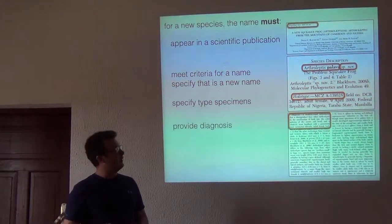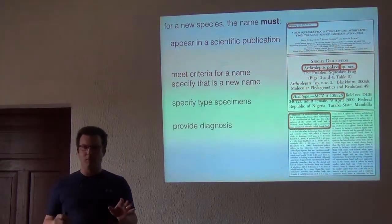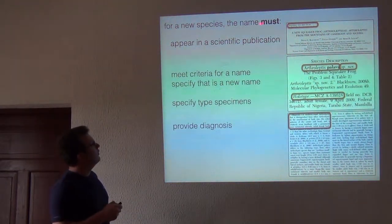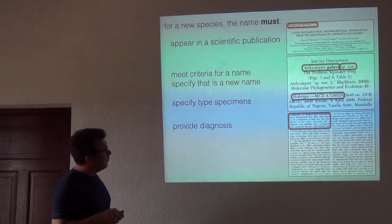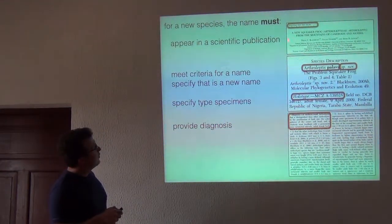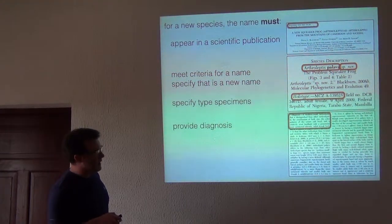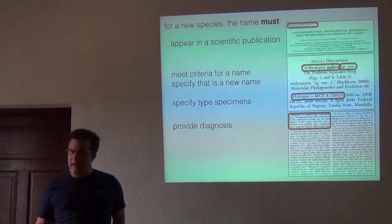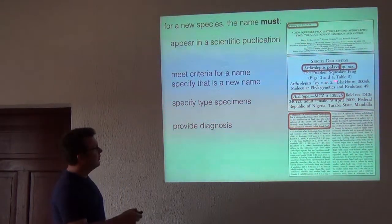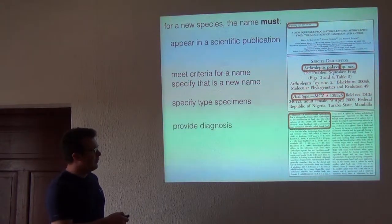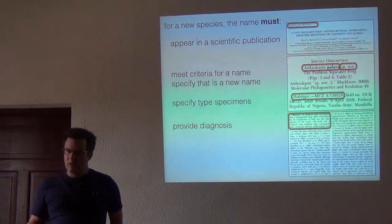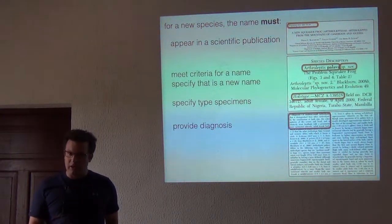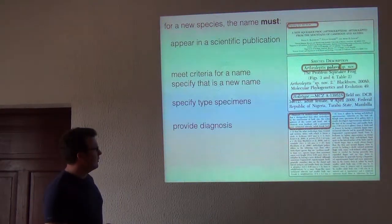The reason that we're doing this, just to reiterate before the break, is that in order for the name to be available, not only does it have to appear in a publication, meet the criteria for a name, and be indicated as a new name — and that's the same in the botanical literature as it is in the zoological literature — but also specifying types as well as the institution they're in. All of those points were just reiterated with the discussion of the botanical literature.